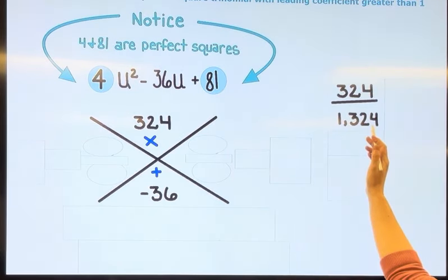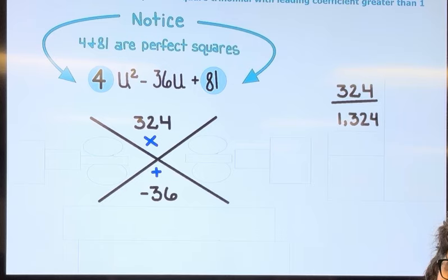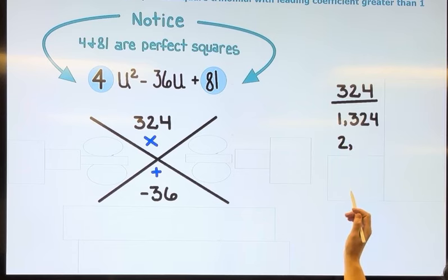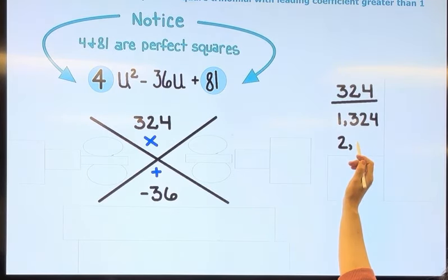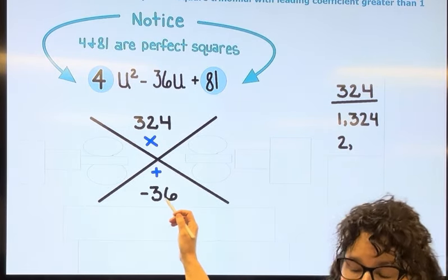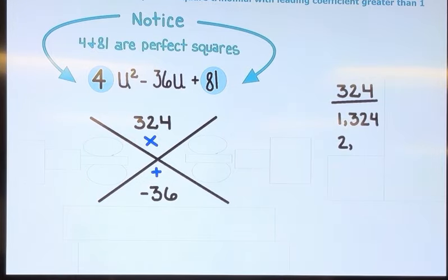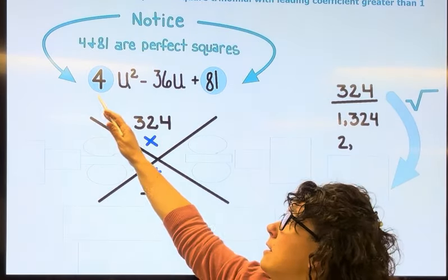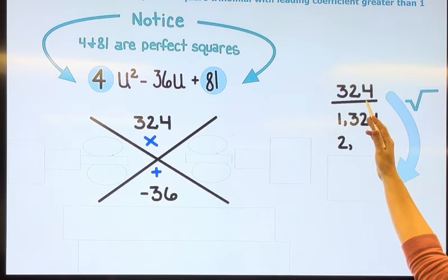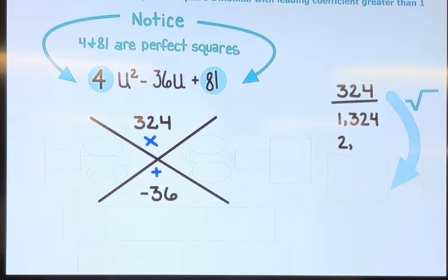1 times 324, and then we'd go on to 2 times something, and we'd keep listing. It's going to take quite a while since it's a bigger number to list all of them and then start thinking about numbers that multiply to get this and add up to this. So the shortcut here is since these are perfect squares, I'm going to take the square root of 324, and I get 18 times 18.